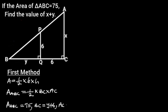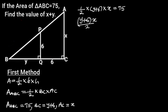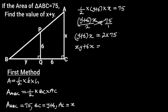AC is equal to X. Substituting these values in the above formula will give us: 1 over 2 times (Y plus 6) times X is equal to 75, which is the same as (Y plus 6) times X all over 2 equals 75. By cross multiplication, (Y plus 6) times X equals 2 times 75. This simplifies to XY plus 6X equals 150. Let's call this equation 1.